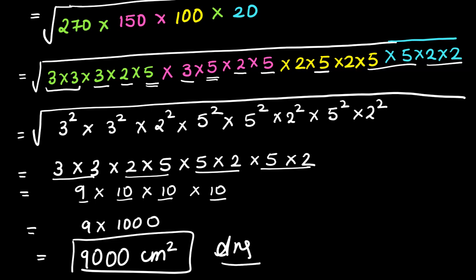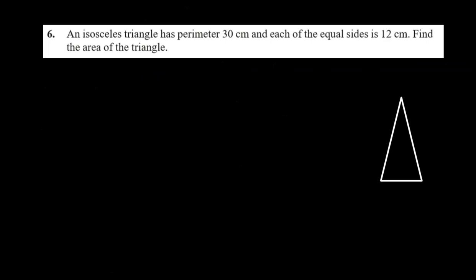I'll solve the next sum quickly in this video only. This is the sixth sum and it says an isosceles triangle has perimeter 30 cm and each of the equal side is 12. Find the area of the triangle. Isosceles triangle, that means two sides are equal as you can see in the picture. Two sides, that means 12 cm. So this is 12 cm and this is 12 cm, and we don't know about this side. Apart from that, perimeter is given. So let us quickly solve this sum, easy sum it is. Each of the equal side, that means let the third side be x.